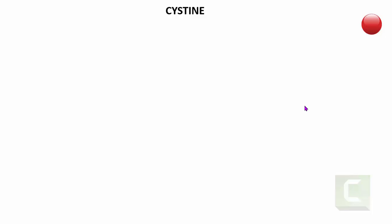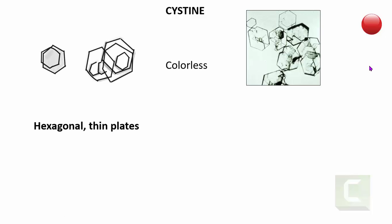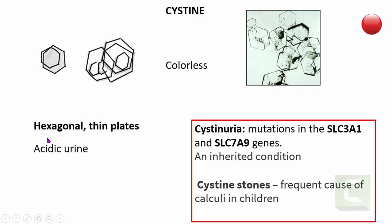The next crystals are the amino acid crystals — and these are all pathological. The first is cysteine crystals, which are colorless hexagonal plates — very thin plates that can be seen singly or stacked one upon the other. They are always found in acidic urine. Cysteine crystals are always pathological, found in a condition called cystinuria — an inherited condition resulting from mutations in the SLC3A1 and SLC7A9 genes. In children, cystine is the most important cause of renal calculi.